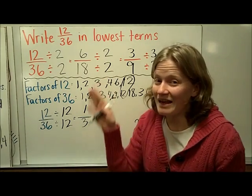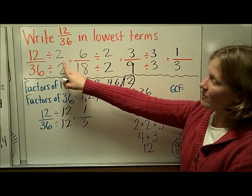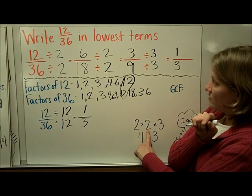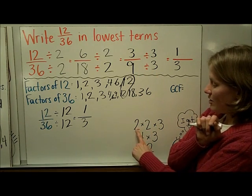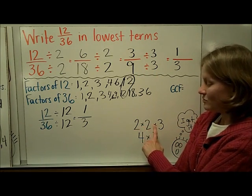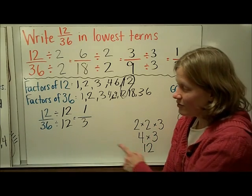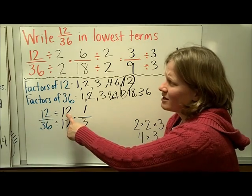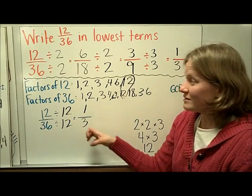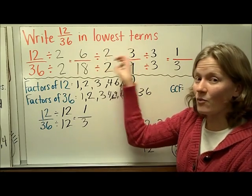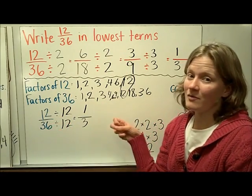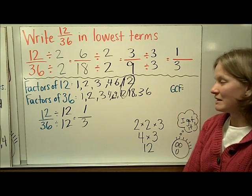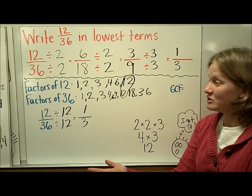I hope you see the connection between both methods. In the first problem, I divided by 2, then by 2 again, then by 3. When you multiply 2 times 2 times 3, you get 12 — which is exactly what I divided by when I used the greatest common factor. So either way, you're really doing the same steps: here you're pulling out one factor at a time, and here you're pulling out the greatest common factor altogether. These are related strategies, and either one will work just as well to simplify fractions.